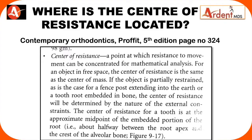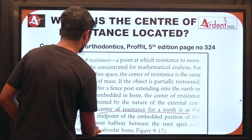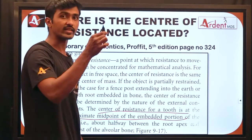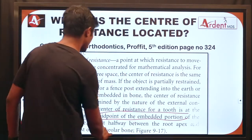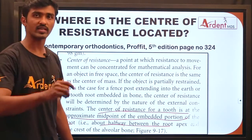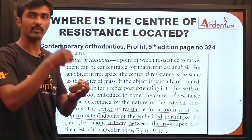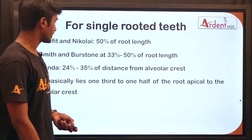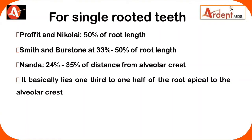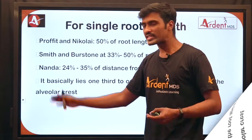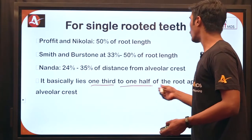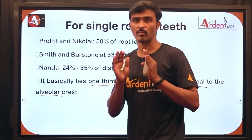Since we keep talking about center of resistance, we should know its precise location. According to Dr. Prophet, the center of resistance for a tooth is at approximately the midpoint of the embedded portion of the root — from the root apex to the alveolar crest. The key reference points are root apex and alveolar crest. Dr. Prophet and Nikolai stated it is at approximately 50% of root length; Dr. Smith and Boston stated it is located from 33% to 50% of root length.